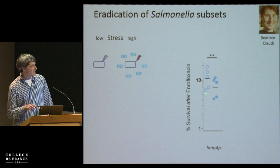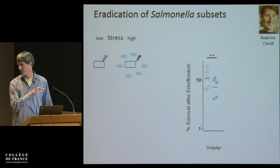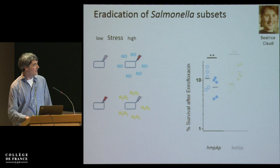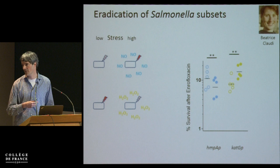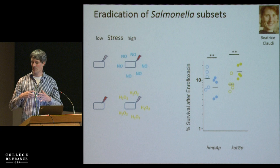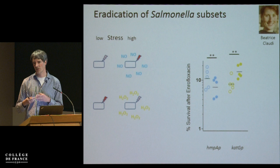Looking at survival after enrofloxacin treatment for one hour: the NO-exposed bacteria are not protected — they are actually dying even a little more. Additional data shows it's not NO causing this effect, it's more the microenvironment. So in our model, NO does not have a big impact. However, for ROS, ROS-exposed bacteria are slightly more resistant — or more tolerant — against therapy with a second-generation fluoroquinolone. This makes sense: the host puts stress on the bacteria, the bacteria defend themselves against ROS stress, and this also helps them survive antibiotic treatment — an interference of the host immune system with antibiotic therapy.